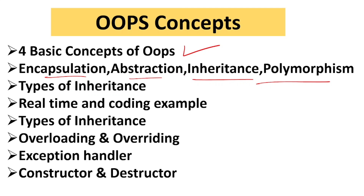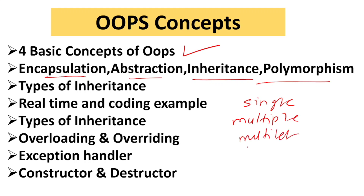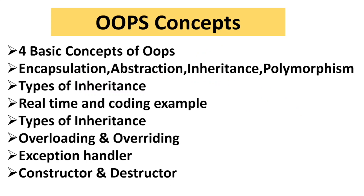They can also ask you to define each concept briefly: what is encapsulation, abstraction, inheritance, polymorphism. Then they'll ask the types of inheritance — there are five types: single, multiple, multi-level, hybrid, and hierarchical. They can ask the difference between multiple and multi-level inheritance. Prepare real-time and coding examples for each OOPs concept, as they can ask for both.